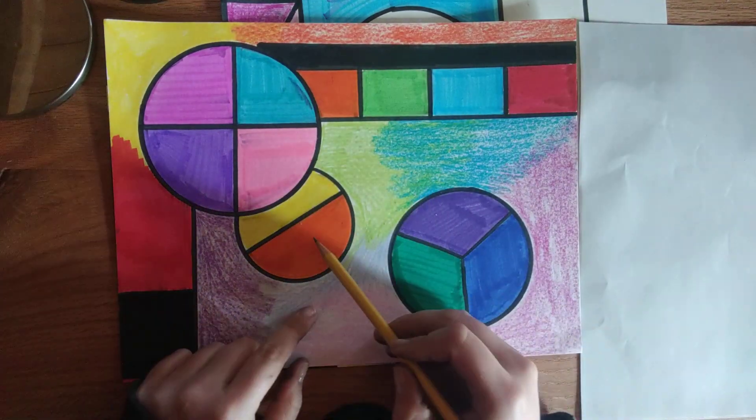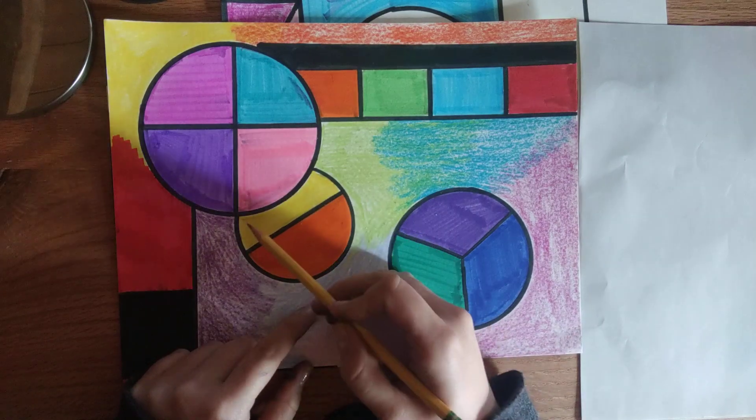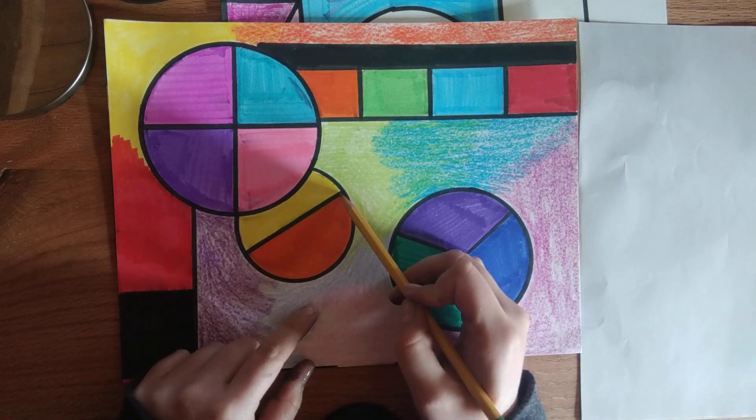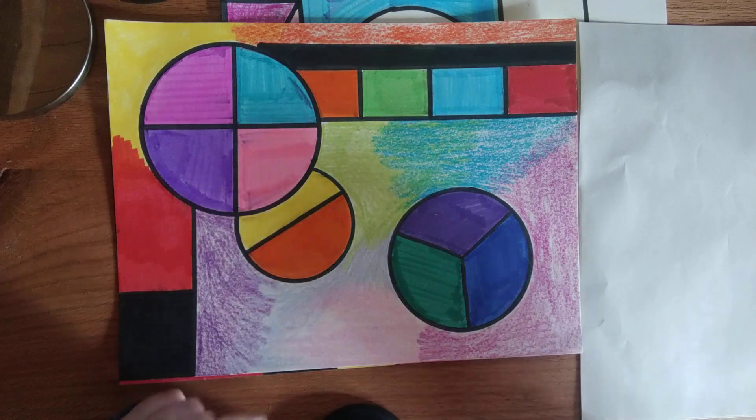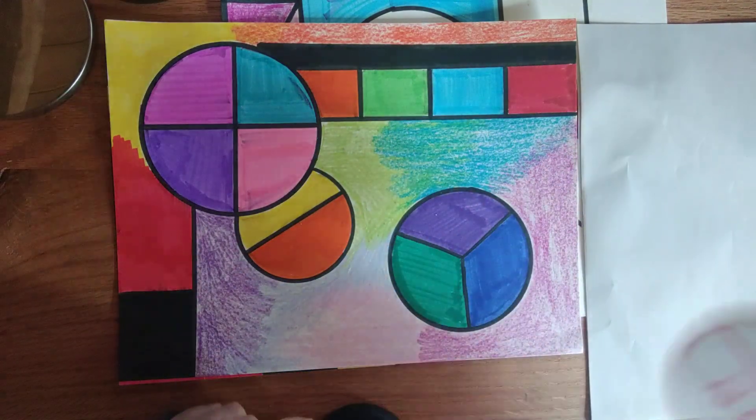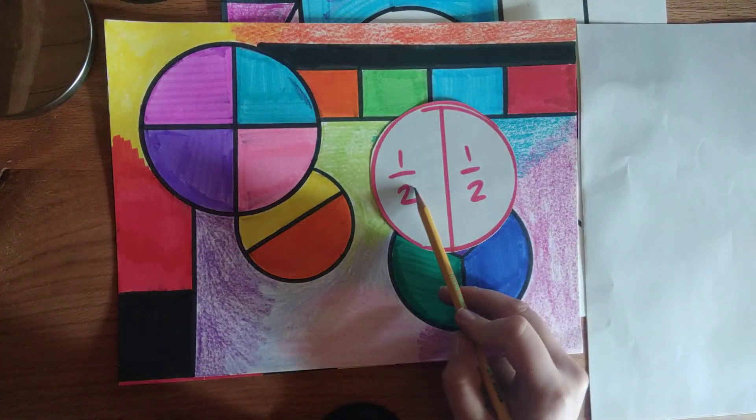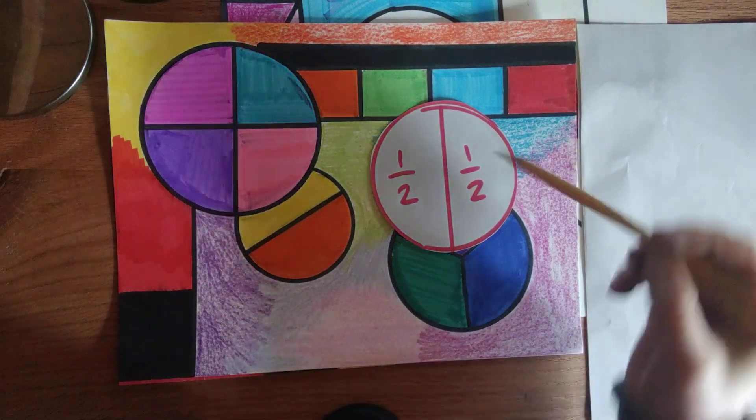This circle is kind of hiding behind the bigger one. I drew a line down the middle. That is half. If you draw a line down the middle of your circle, you have one half and then the other half.